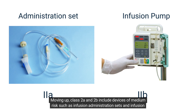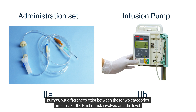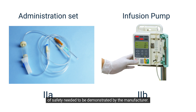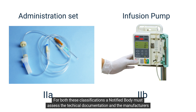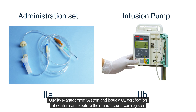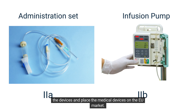Moving up, class 2A and 2B include devices of medium risk such as infusion administration sets and infusion pumps, but differences exist between these two categories in terms of the level of risk involved and the level of safety needed to be demonstrated by the manufacturer. For both classifications, a notified body must assess the technical documentation and the manufacturer's quality management system and issue a CE certification of conformance before the manufacturer can register the devices and place them on the EU market.